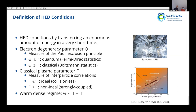In nature, warm dense matter appears in the core of the Earth, in the cores of giant gas planets like Jupiter, and further up at the solar core. For technological applications, inertial confinement fusion capsules go through the warm dense regime during the heating process. So the warm dense regime is important for both fundamental science and technological applications.